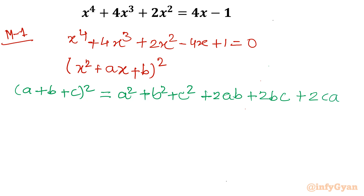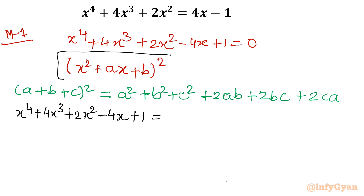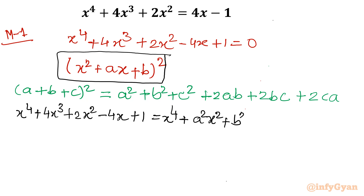Now I am going to apply this identity. The left hand side is x⁴ plus 4x³ plus 2x² minus 4x plus 1. The right hand side, using the expansion, gives x⁴ plus 2ax³ plus (a² + 2b)x² plus 2abx plus b².